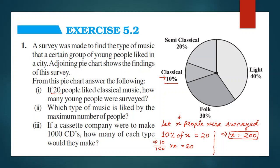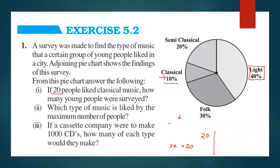Part (b) asks which type of music is liked by the maximum number of people. Straightforward — light music covers the maximum area in the pie chart, so light music is liked by the maximum number of people. Part (c) asks: if a cassette company were to make 1000 CDs, how many of each type would they make? The company should produce CDs proportional to the percentage preferences so that all CDs can be sold without backlog.